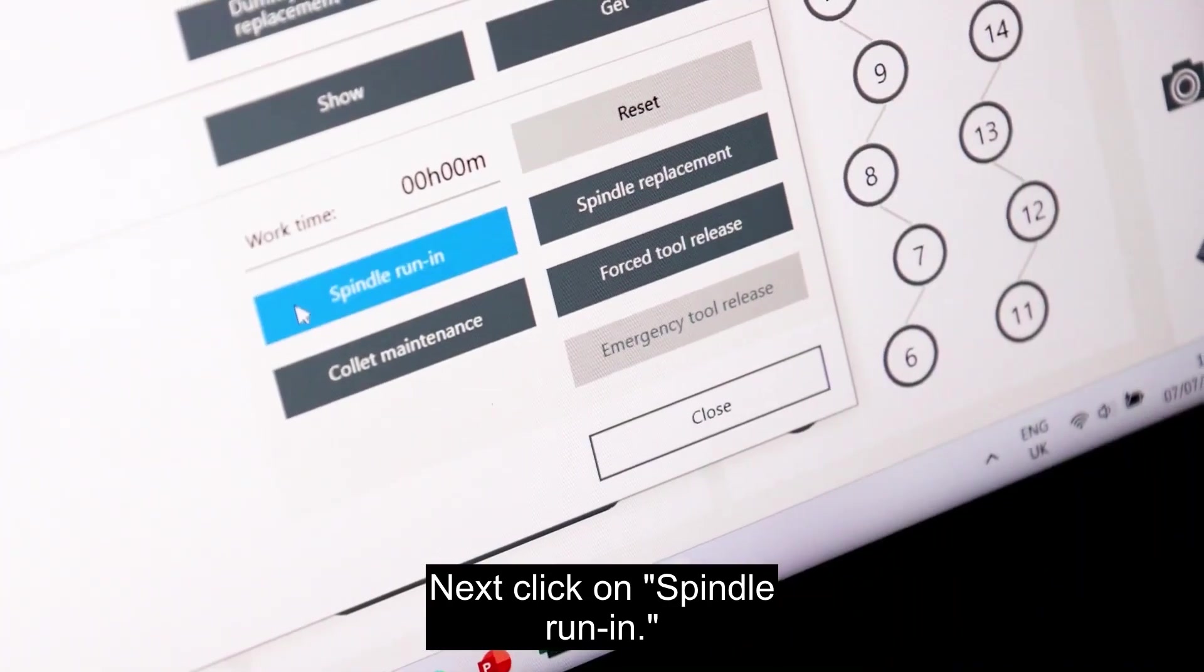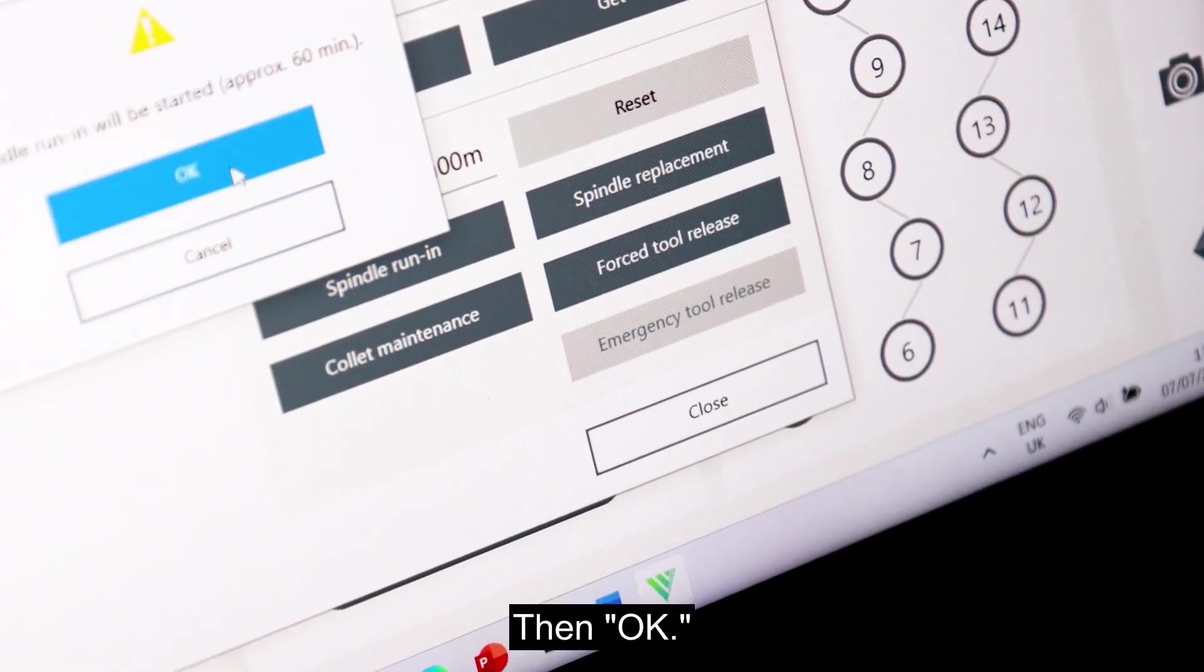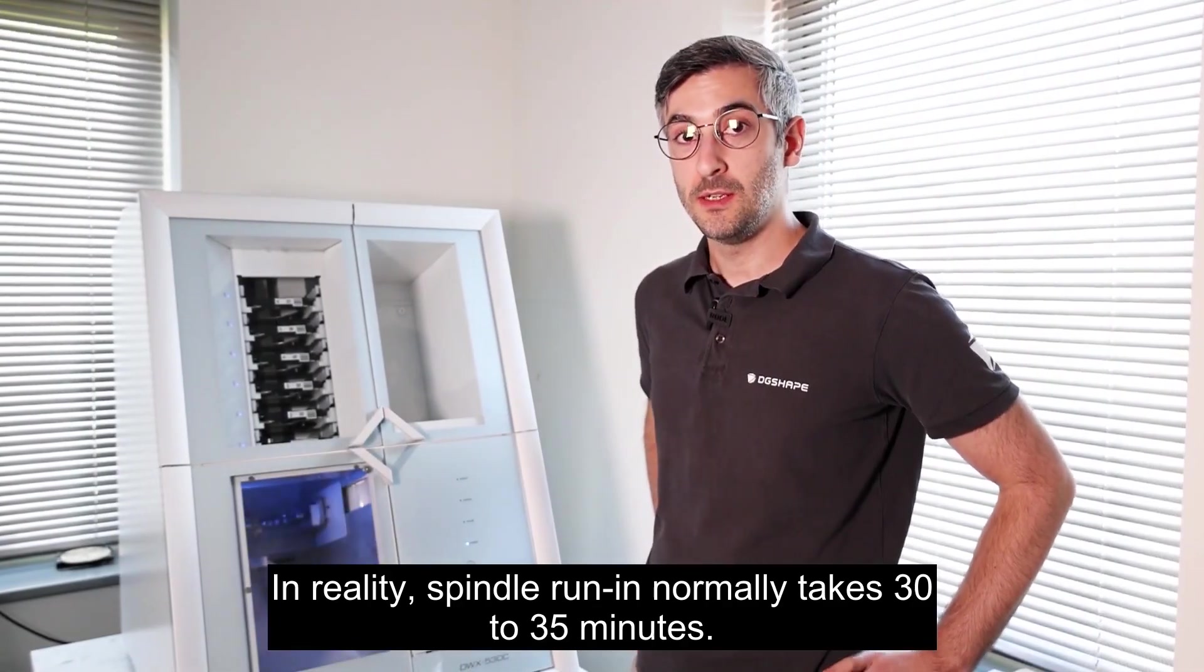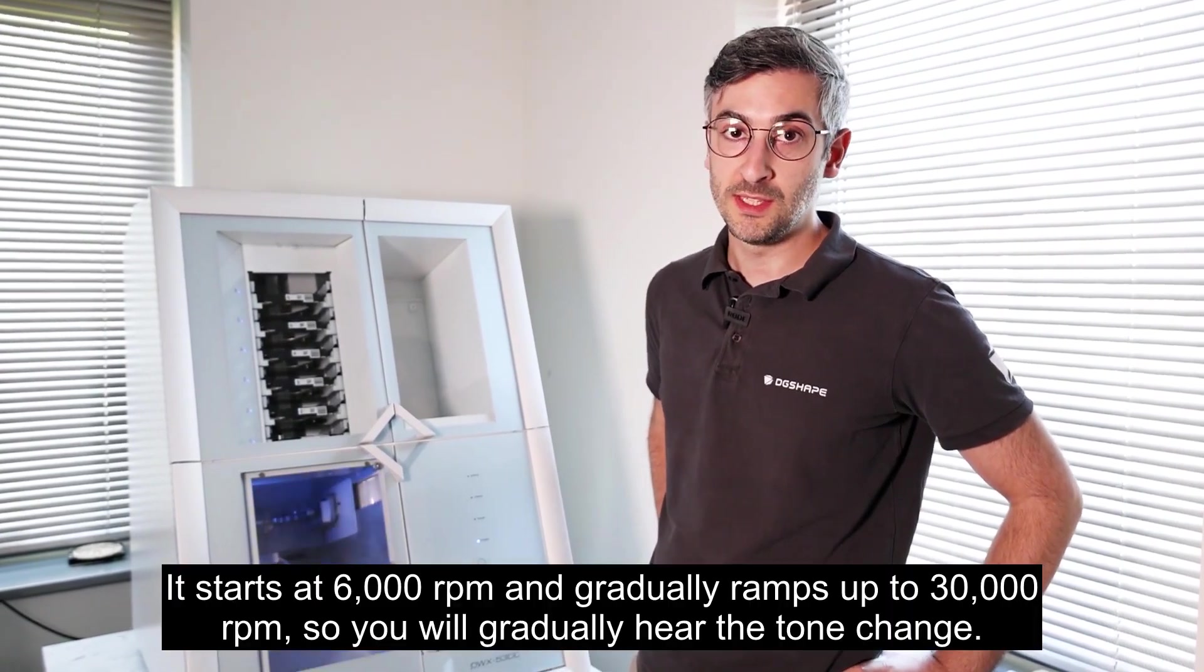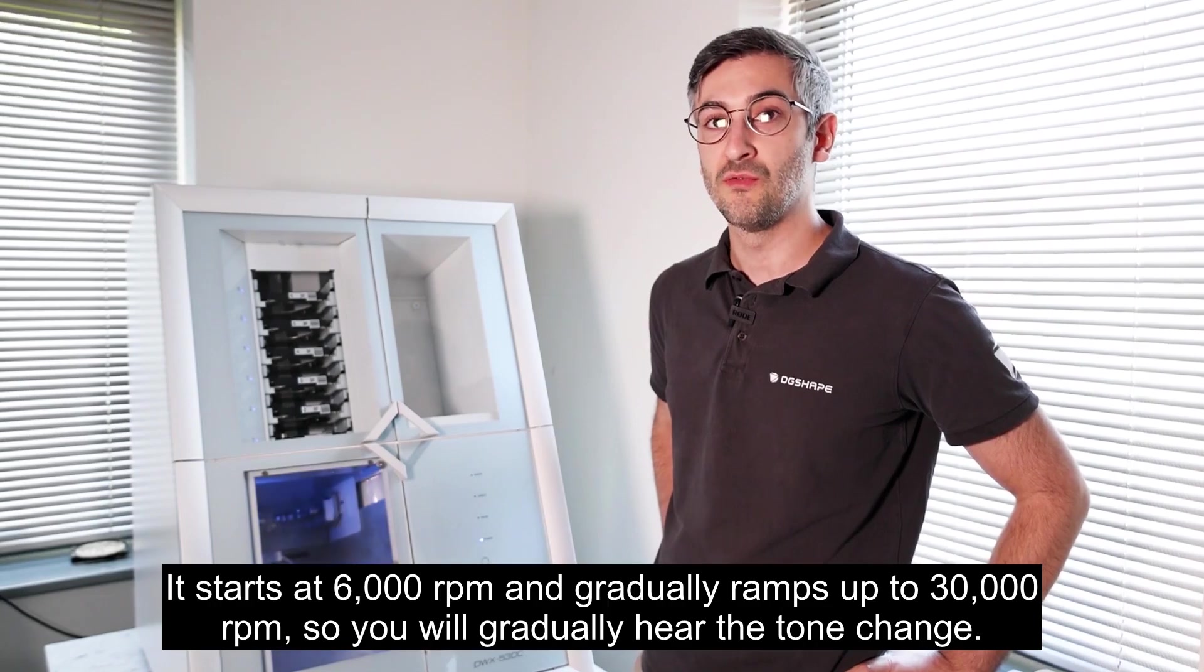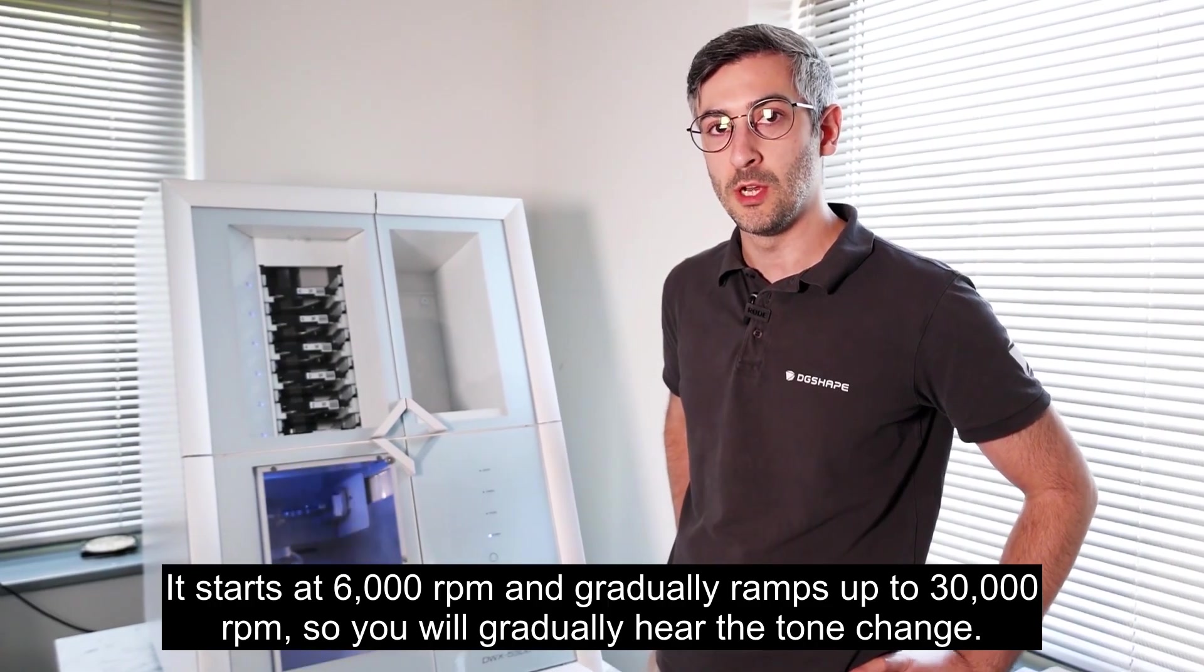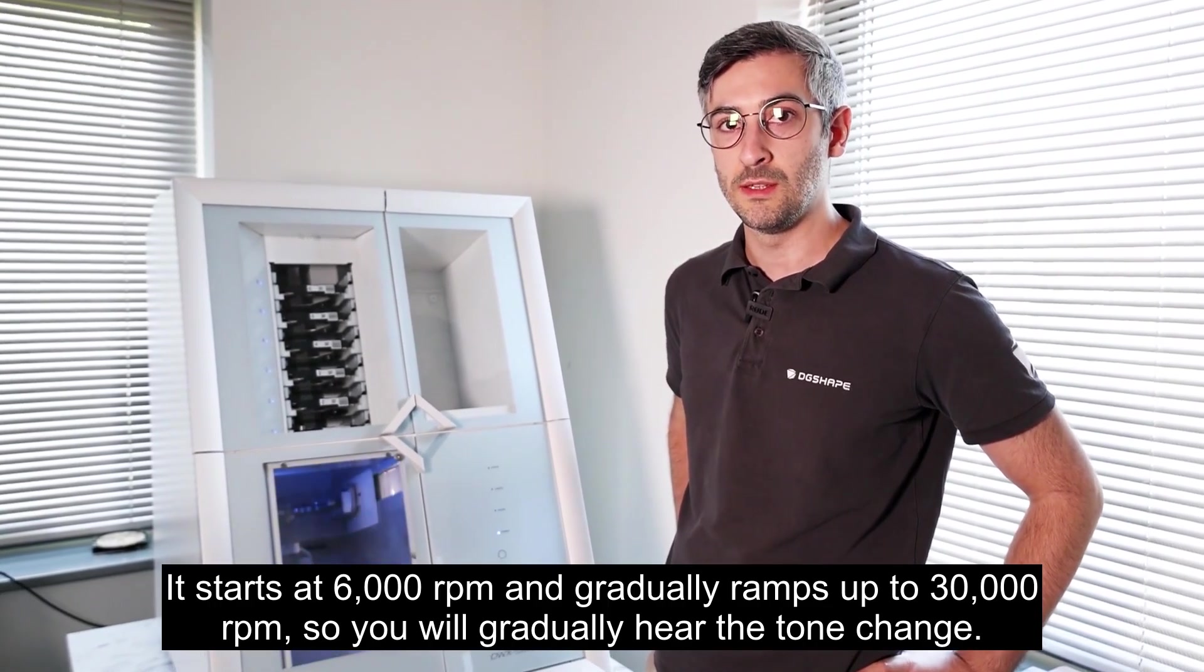Next click on spindle run-in, then OK. In reality, spindle run-in normally takes 30 to 35 minutes. It starts at 6,000 rpm and gradually ramps up to 30,000 rpm, so you will gradually hear the tone change.